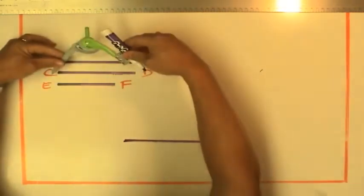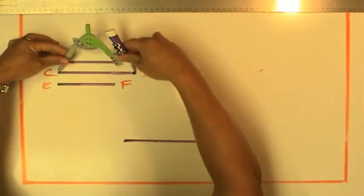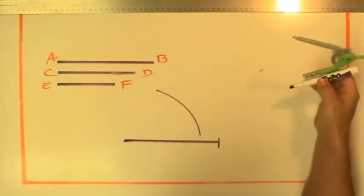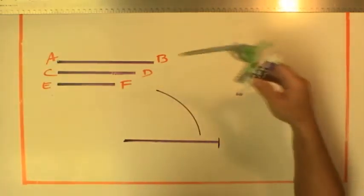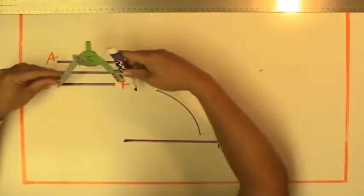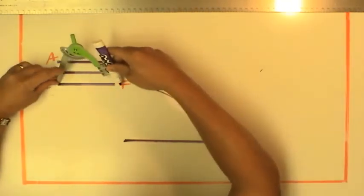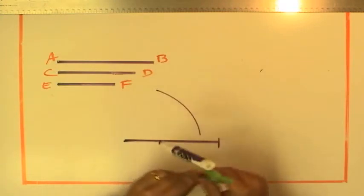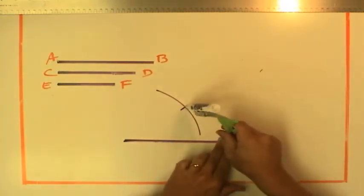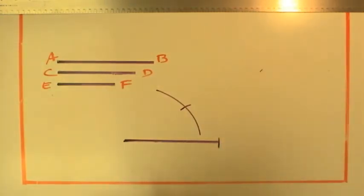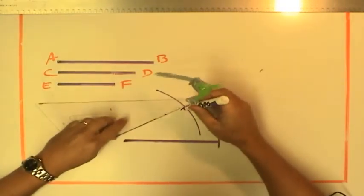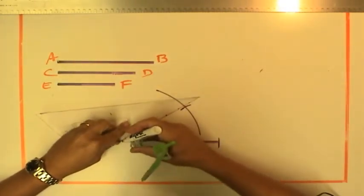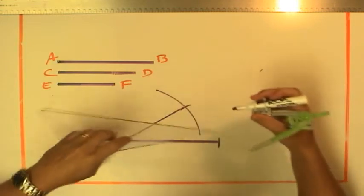Length CD is this length. We'll start from one end and strike an arc whose radius is CD. From the other end, we'll strike an arc whose radius is EF. Those two will meet at the magic point, and that's our triangle. We'll triangulate and fill in these lines.